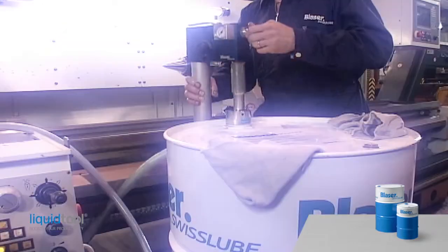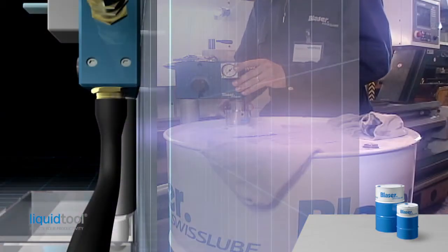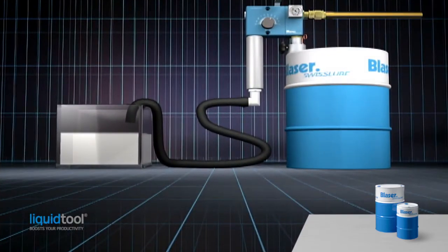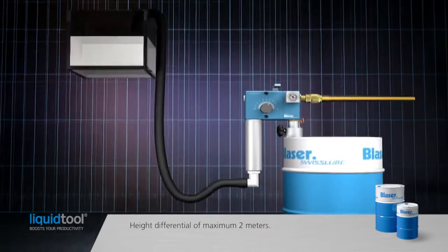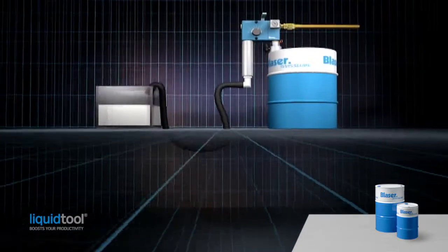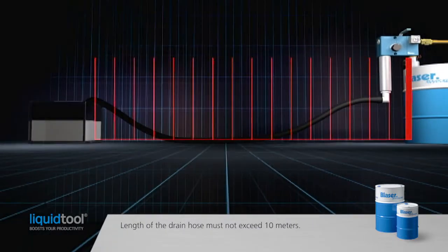It is essential to comply with the following rules. The drain hose to the machine sump must not exceed a height differential of two meters above or below the top of the drum. The length of the drain hose from the jet mix to the sump must not exceed 10 meters.